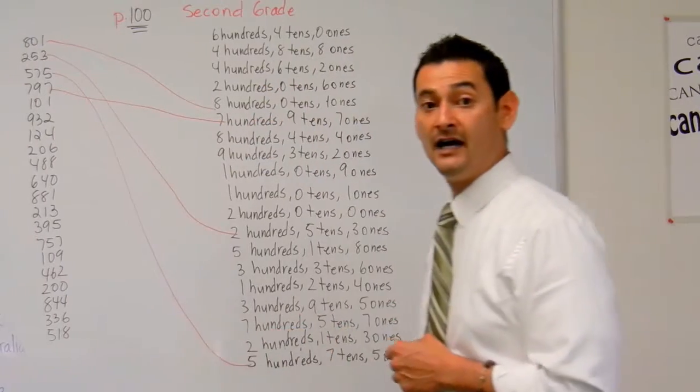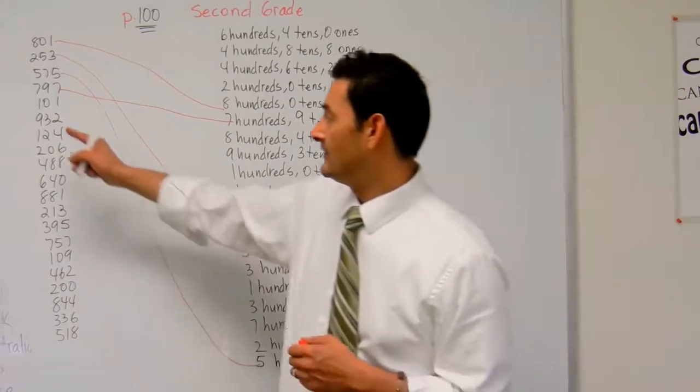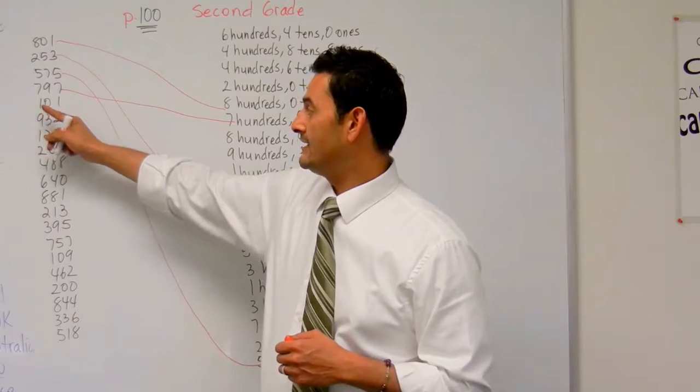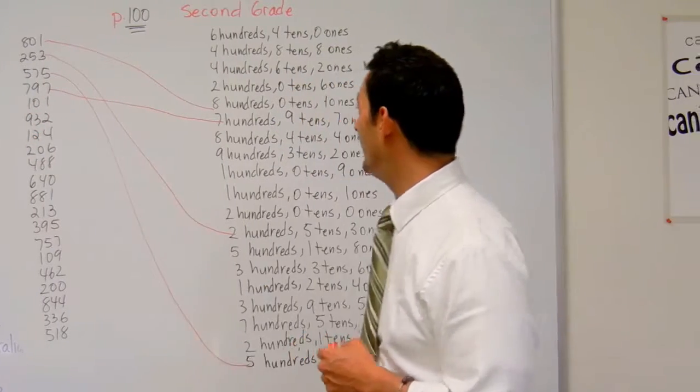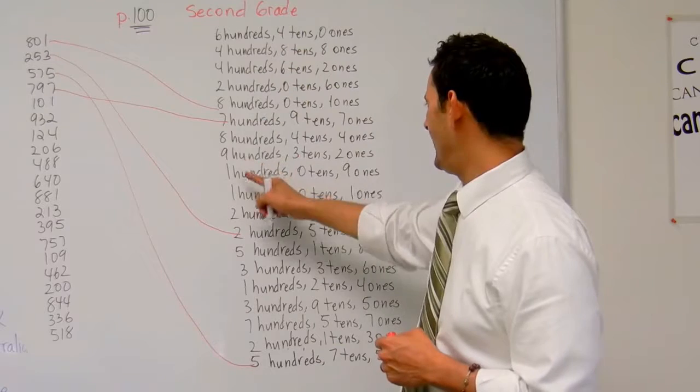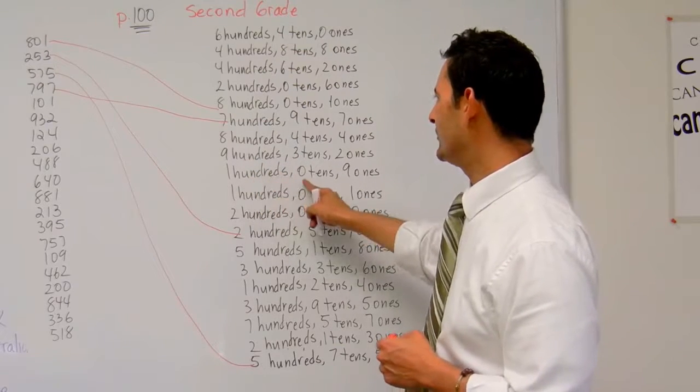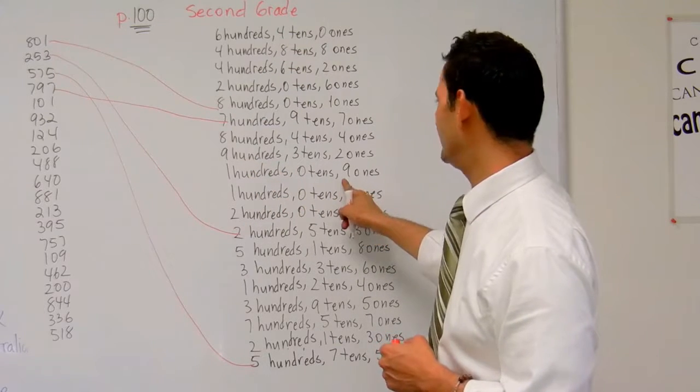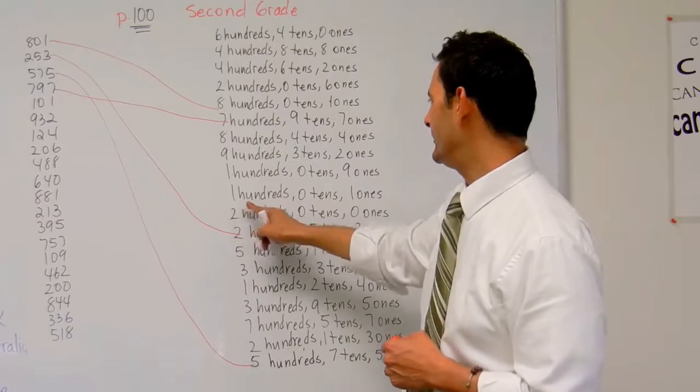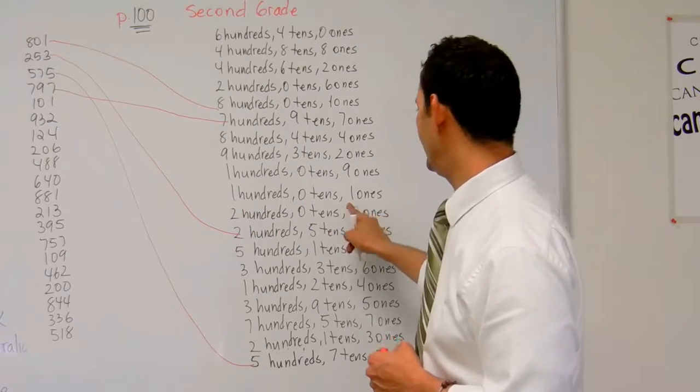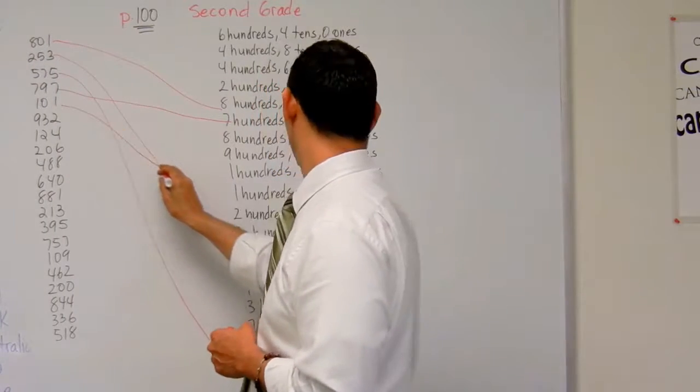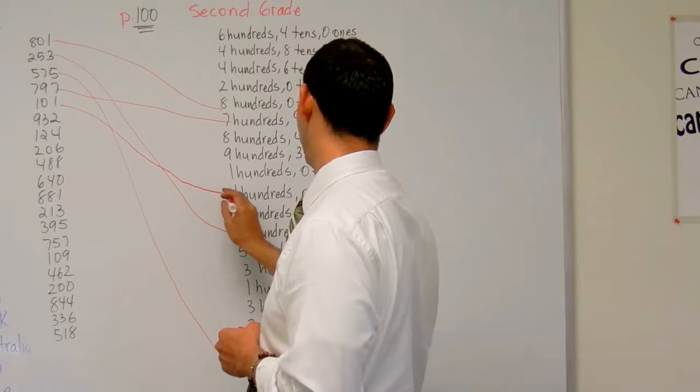Number five, we have 101. I have one in the hundreds place, zero tens, and one one. So let's look for one. One hundred, zero tens. So far, so good. Nine ones. That's not it. One hundred, zero tens, one one. That is correct. Hundred one, and it's right there.